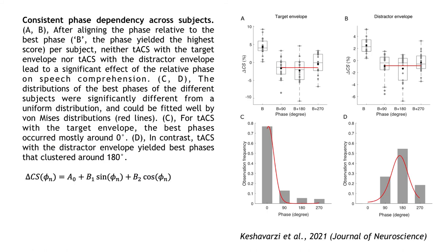After aligning the phase relative to the best phase per subject, we found no significant modulation for either TACS with the target envelope or TACS with the distractor envelope. Moreover, the distributions of the best phases across different subjects were significantly different from a uniform distribution for both types of neural stimulation, suggesting a consistent phase dependency across subjects.